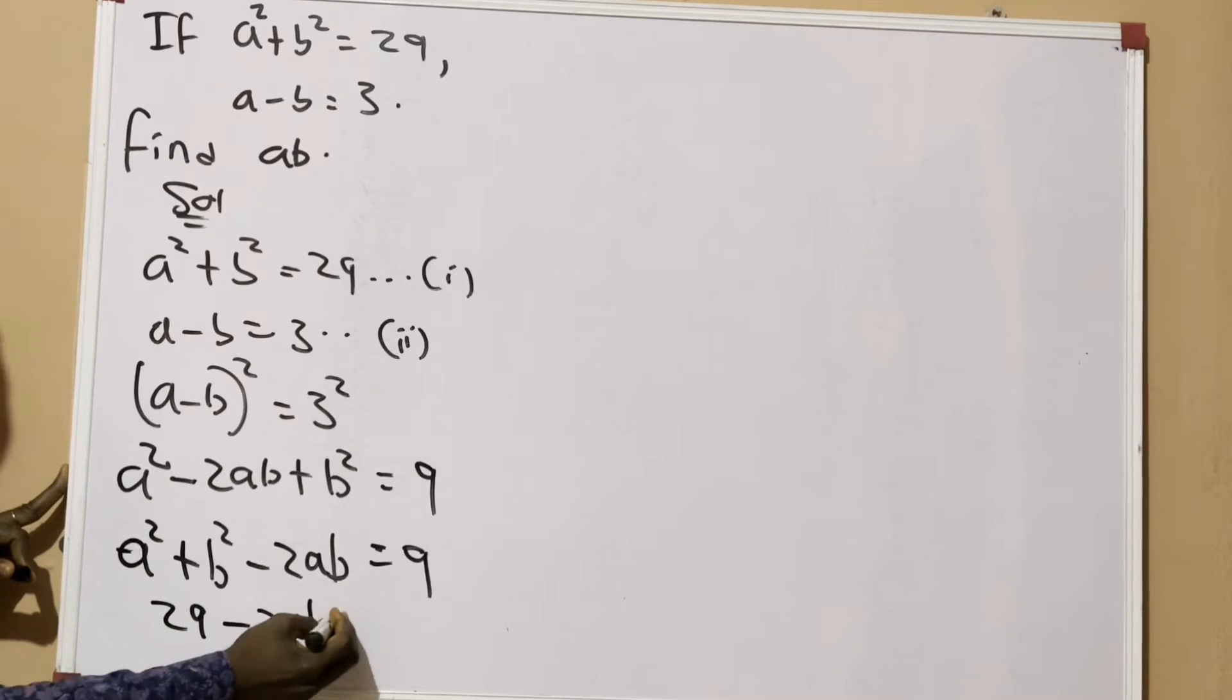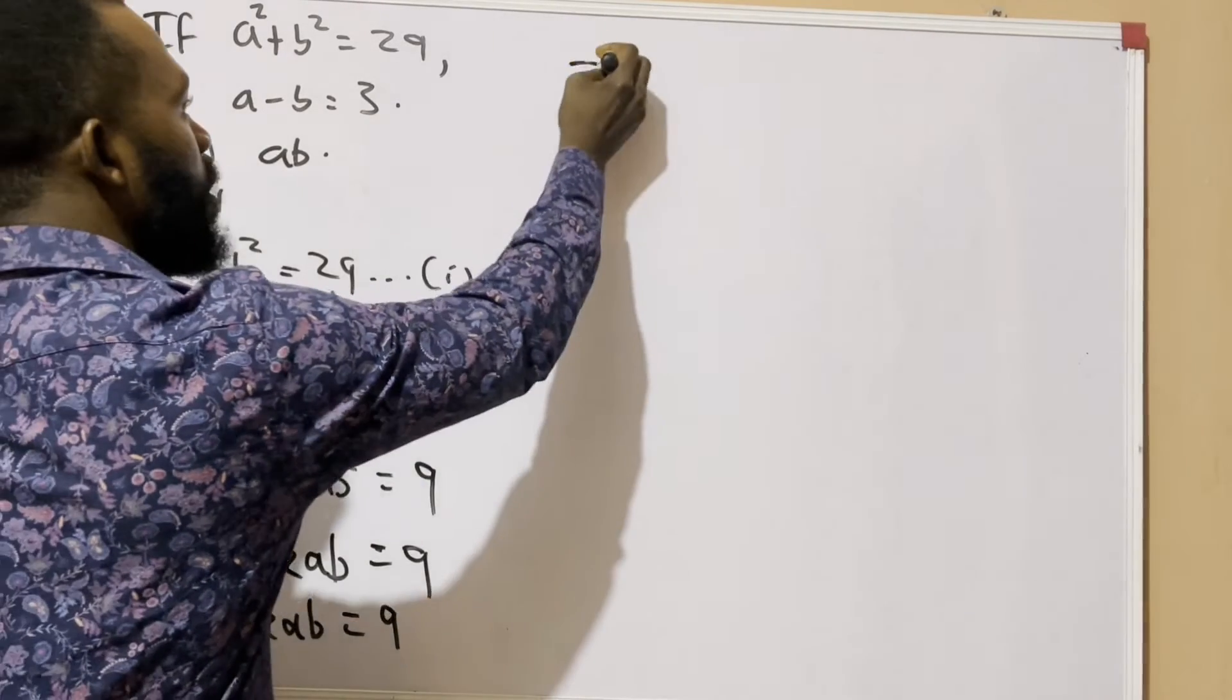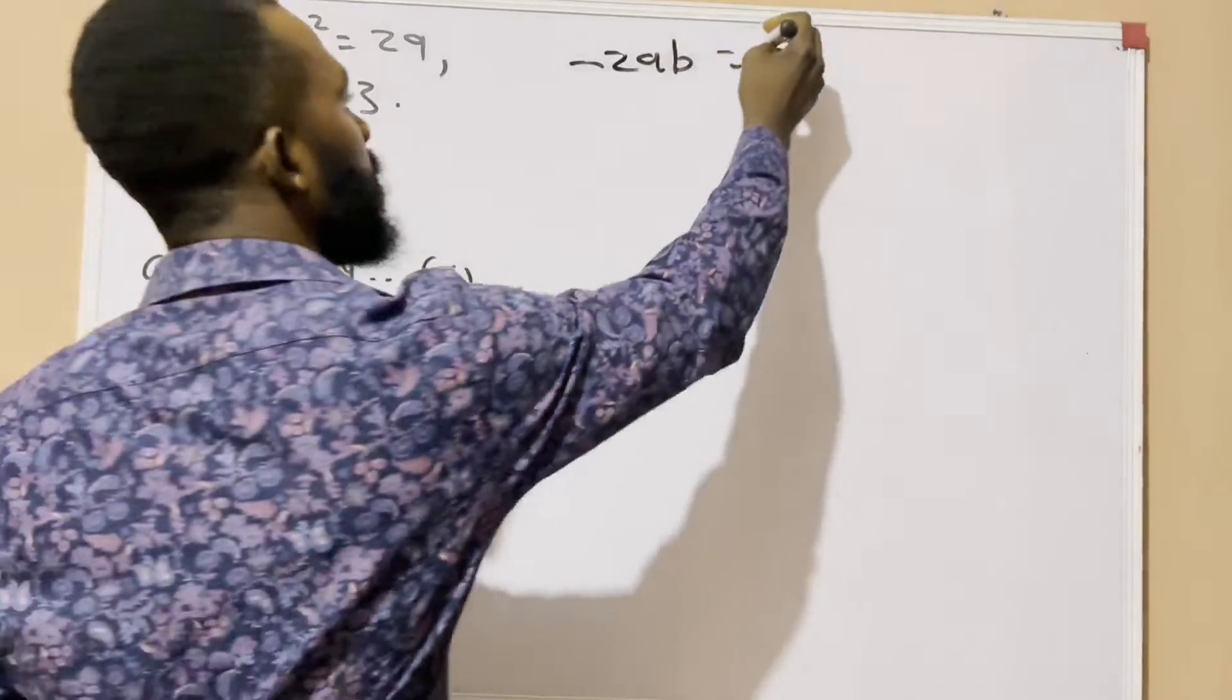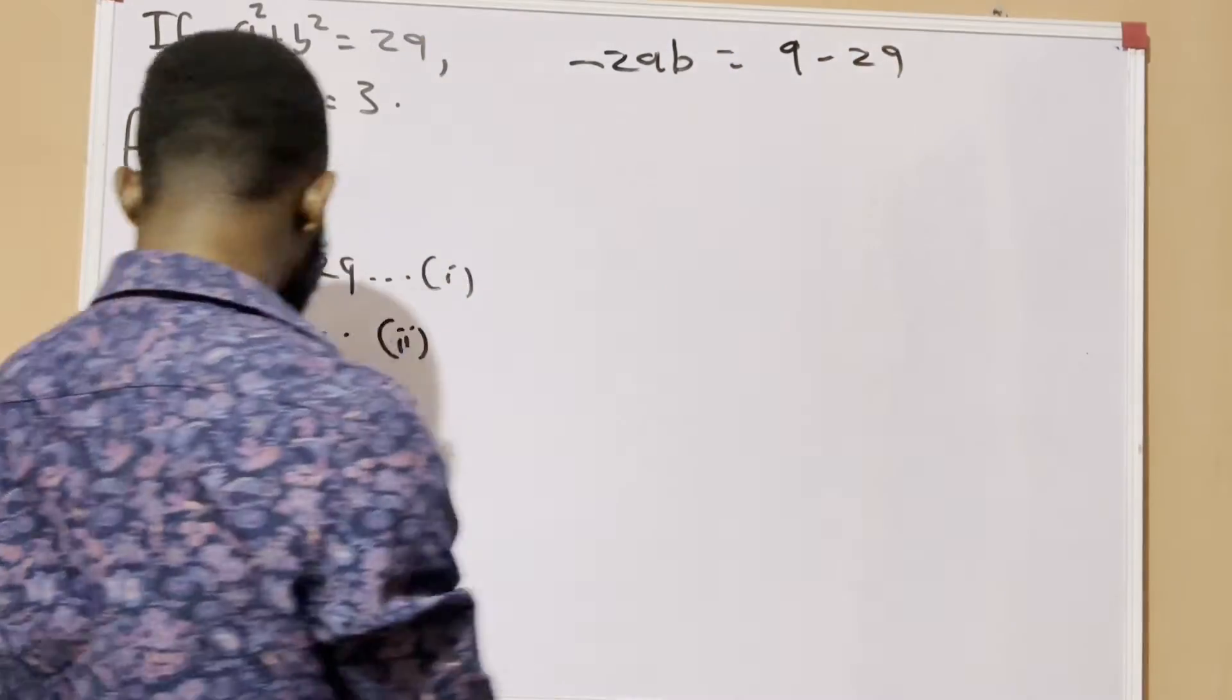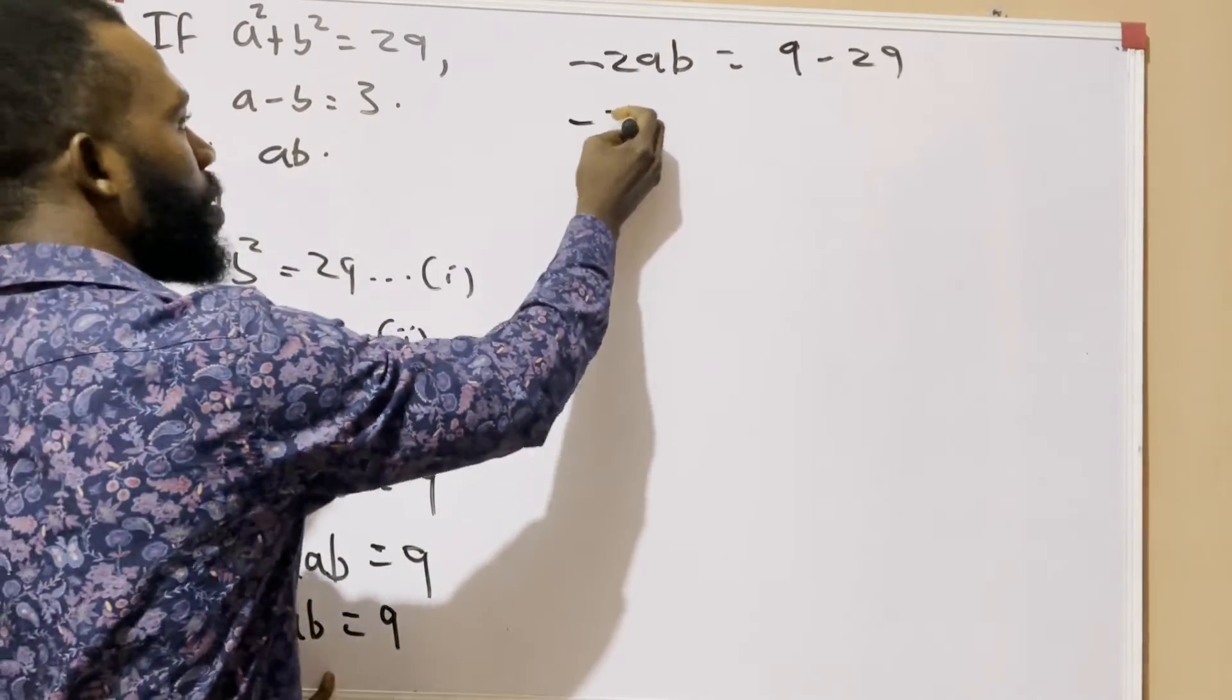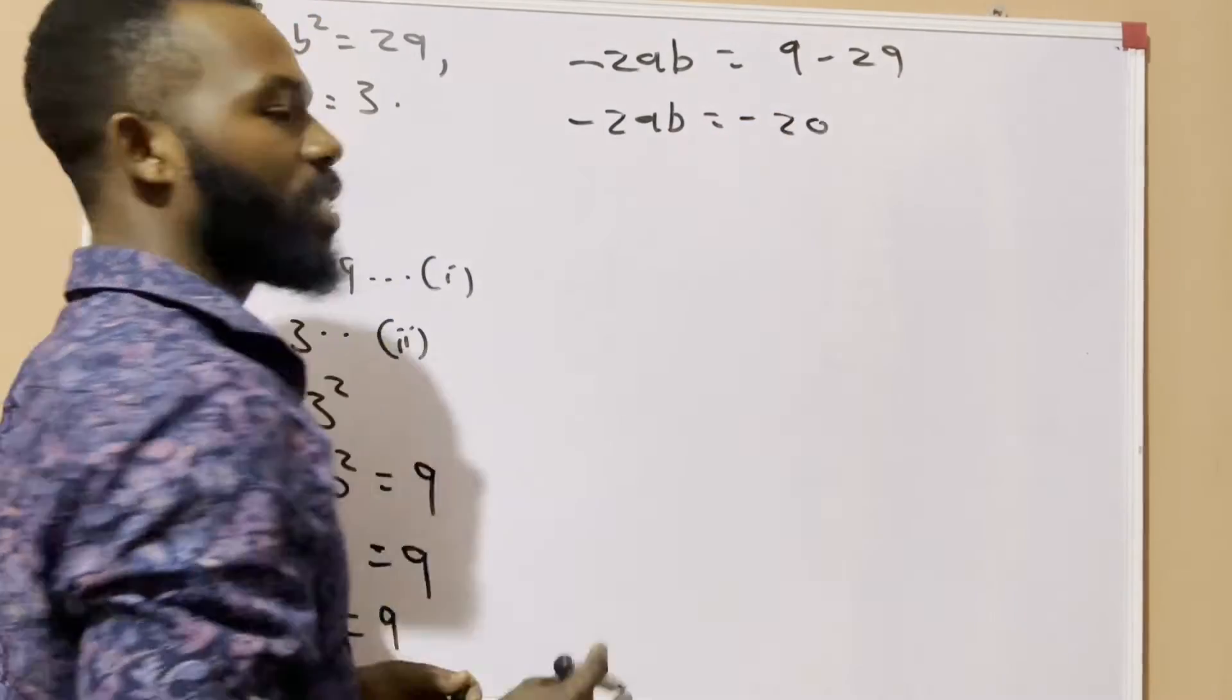So 29 - 2ab = 9. Now I'll collect like terms. When 29 crosses to the right hand side of the equation, I'm going to have -29. So here becomes -2ab = 9 - 29, which equals -20.